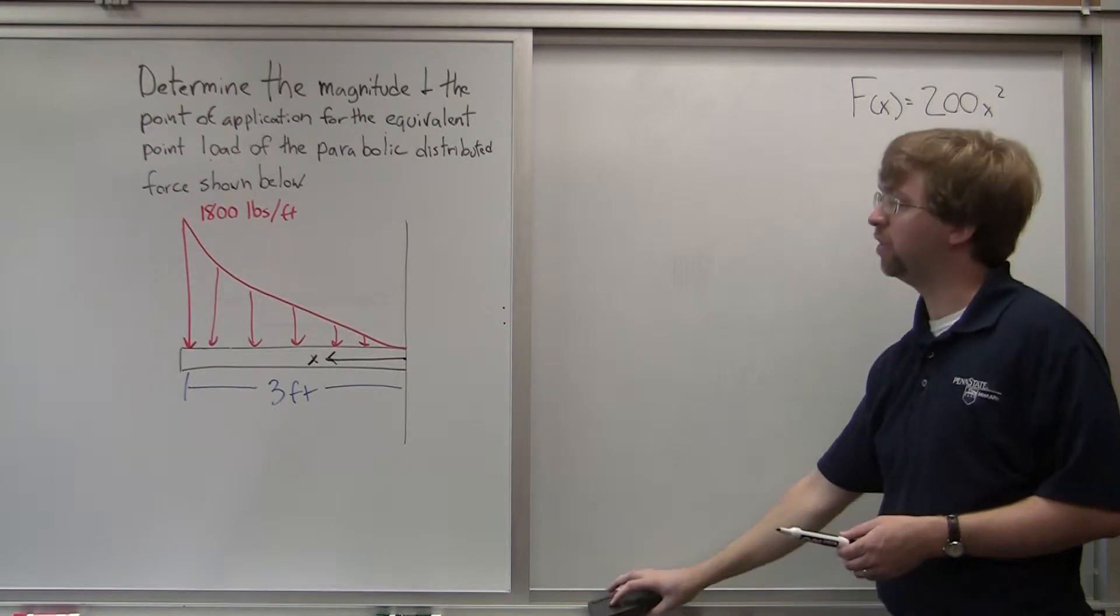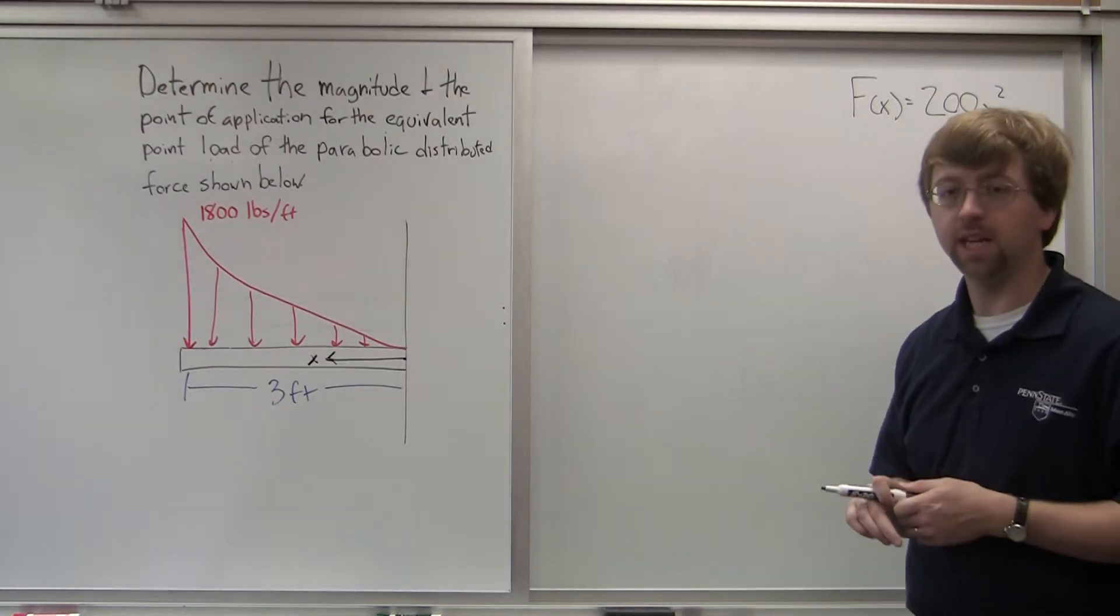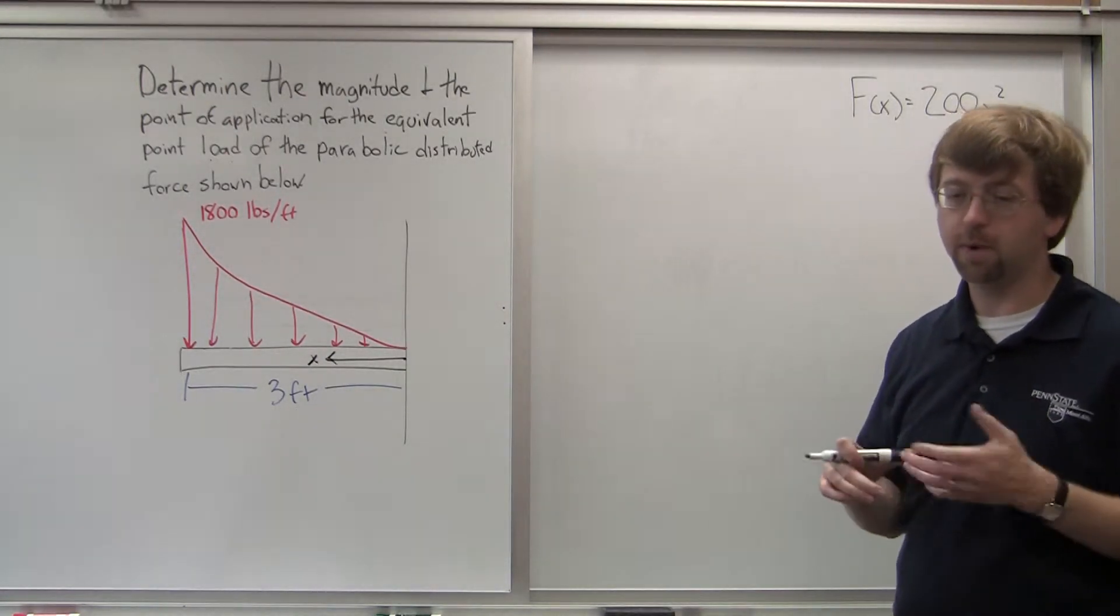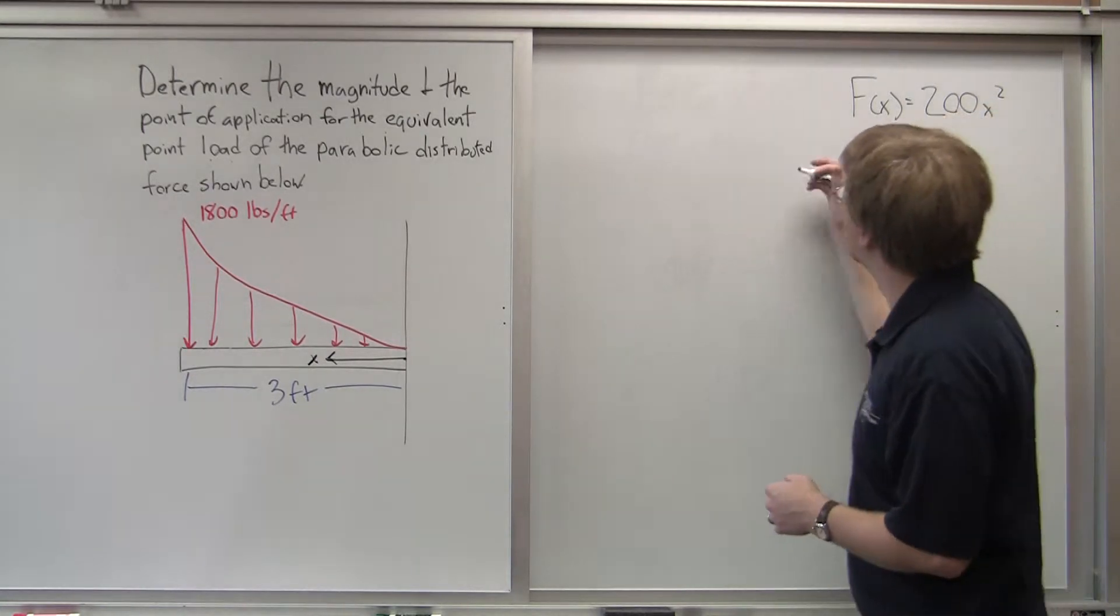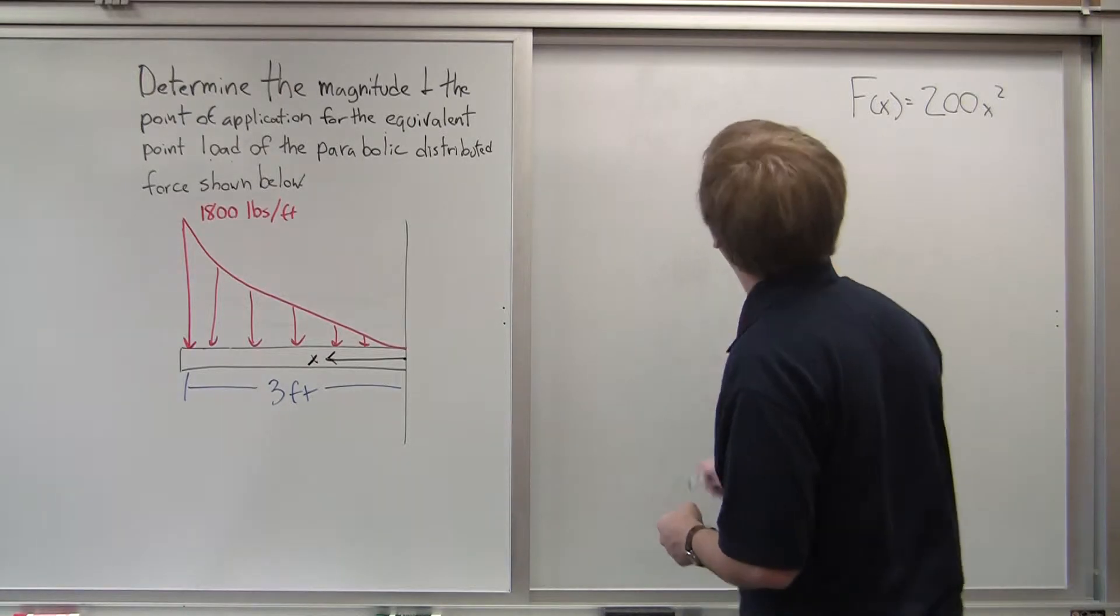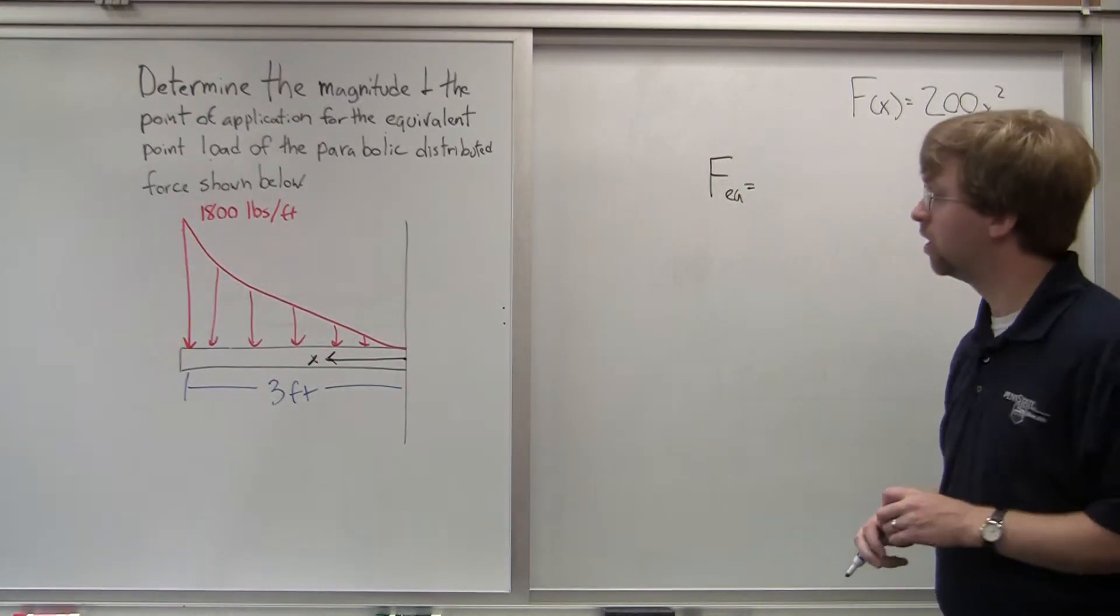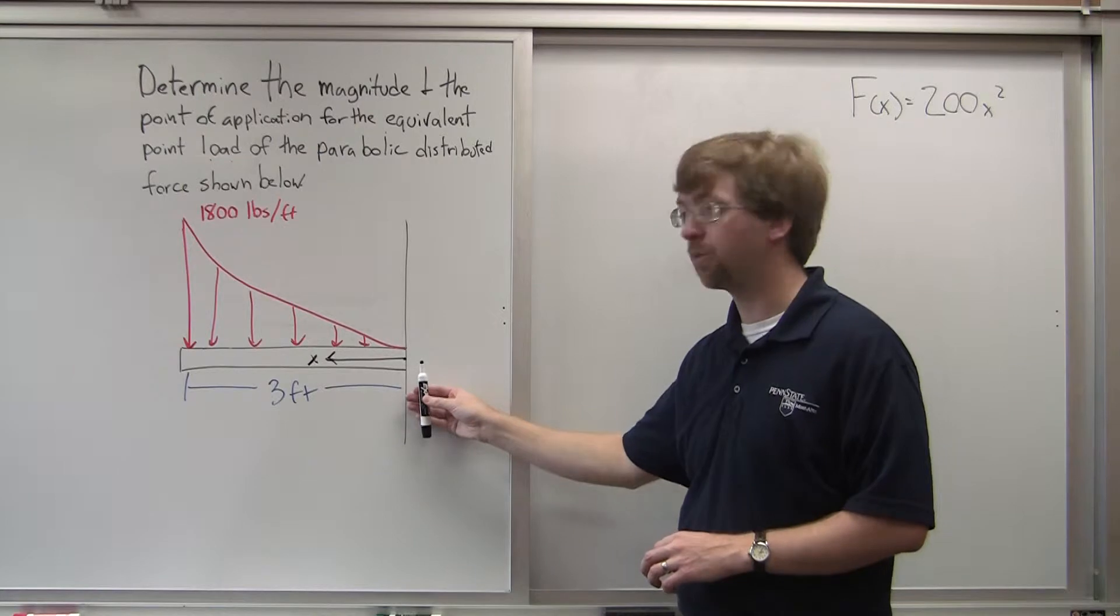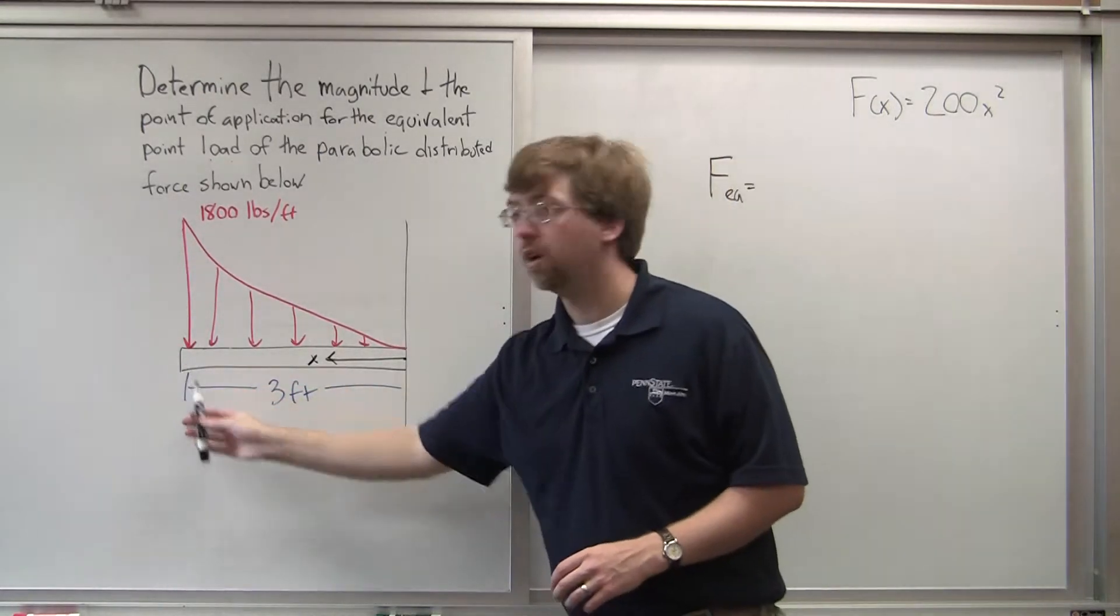Next thing we need to do is we need to solve for the magnitude of the equivalent point load. So that's going to be f e q. And that's going to be equal to the integral from over the range. So I'm going from 0 out to 3 feet.